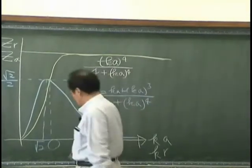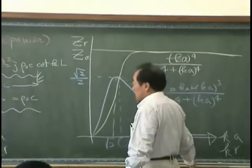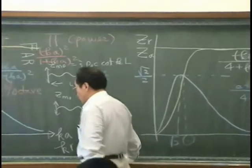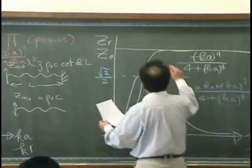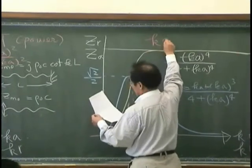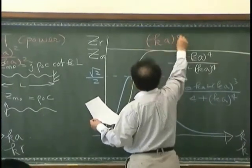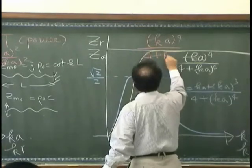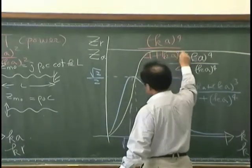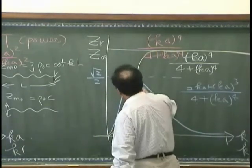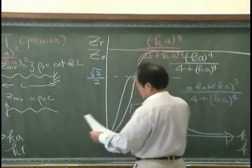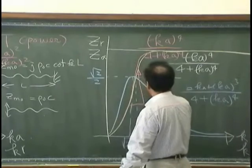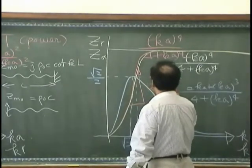And another one, interesting point, is the radiation power, behavior of radiation power. And that look like Ka to the fourth, 4 plus Ka to the fourth, and that behave like this. The behavior over here is 12 dB per octave.